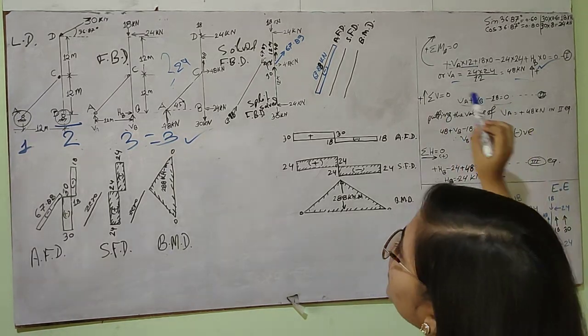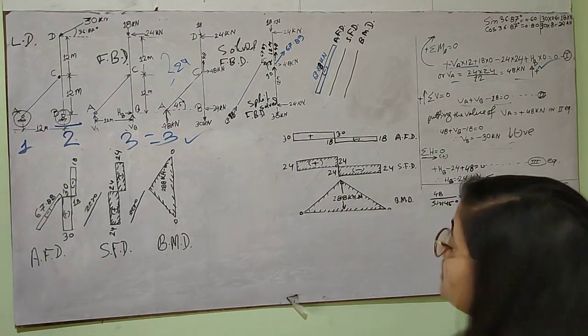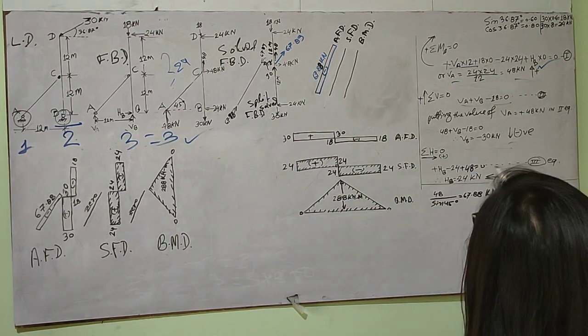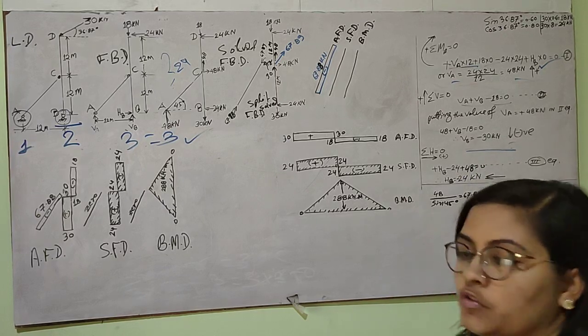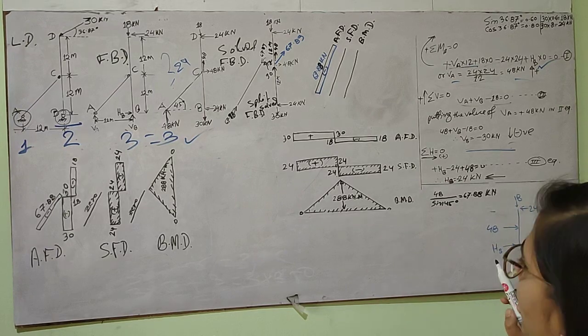For that I'll use another equation of equilibrium: Sigma V equals zero. So VA plus VB both acting upward minus 18 which is acting downward. Substituting the value of VA equals 48 kilonewtons, I get the value of VB as minus 30 kilonewtons, which is negative.